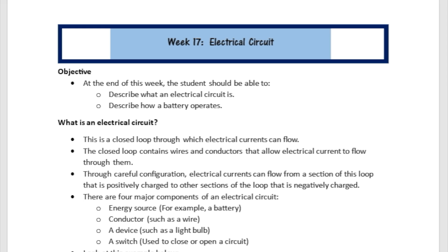So what is an electrical circuit? If you see this diagram, it's going to make a lot of sense to you just like that. But an electrical circuit is a closed loop through which electrical currents can flow.